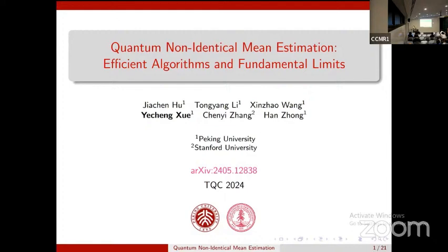In this paper, we analyze a new setting of the quantum mean estimation problem. We focus on non-identical quantum random variables. We systematically analyze this new setting — the upper bound and the lower bound. We define what non-identity of quantum random variables means, and we will see how it makes the quantum mean estimation problem different.